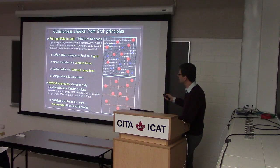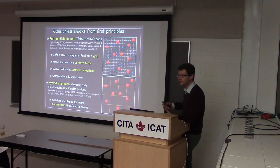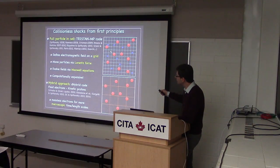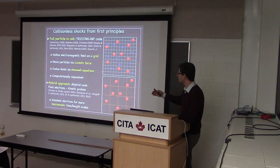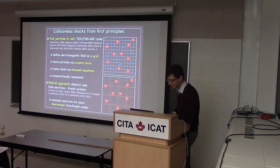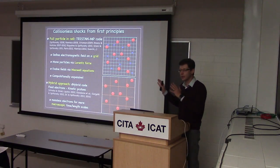We have both kinds of charges. Particles are defined on the grid, feel the Lorentz force from electromagnetic fields interpolated to their location. As particles move, they deposit current, which is used as a source for Maxwell's equations. You solve Maxwell's equations, get updated fields, and move the particles again. This is guaranteed to work, but it's extremely expensive.